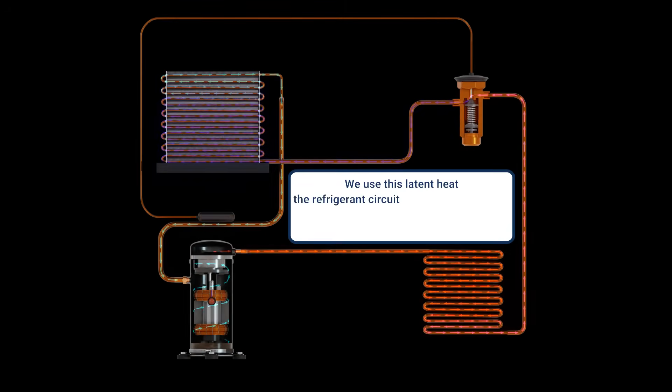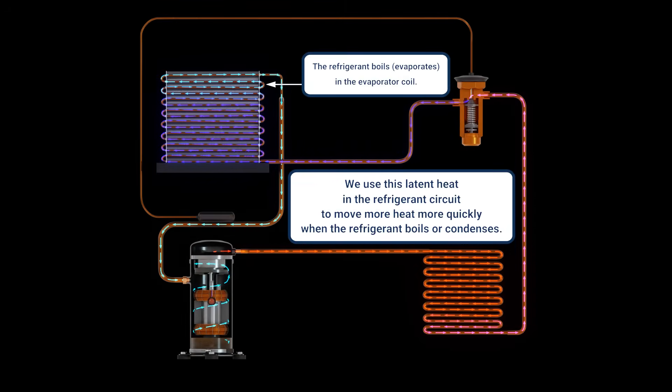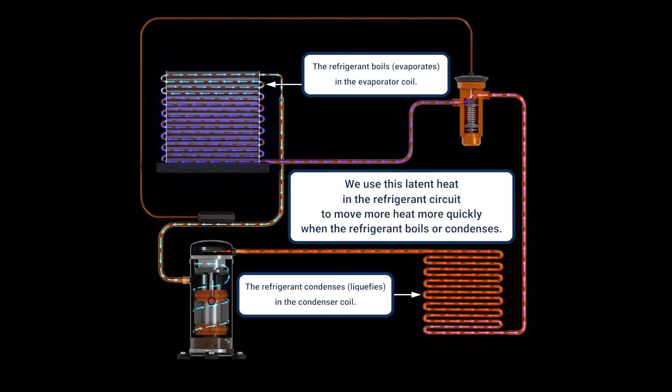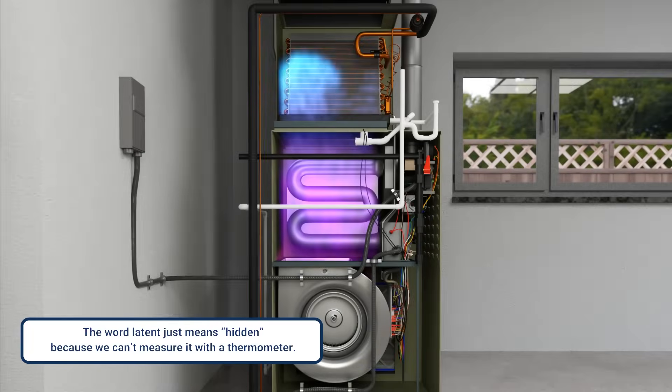We use this latent heat in the refrigerant circuit to move more heat more quickly when the refrigerant boils or condenses. The word latent just means hidden, because we can't measure it with a thermometer.